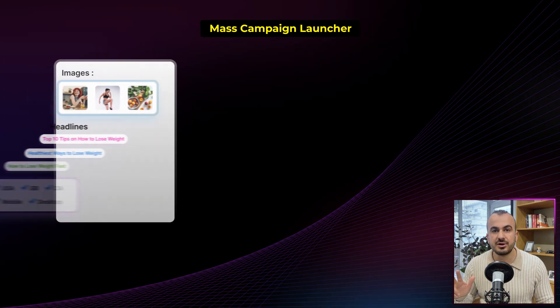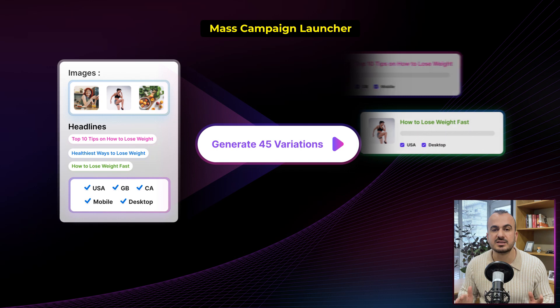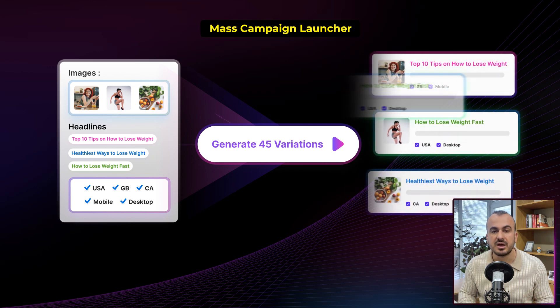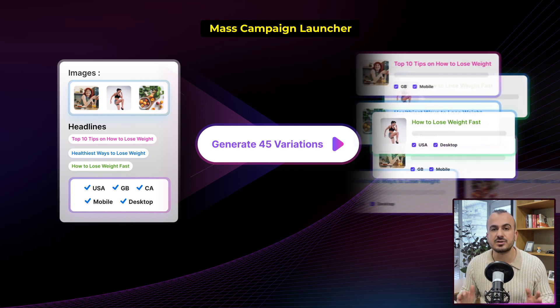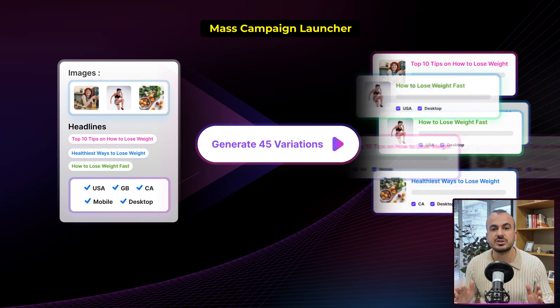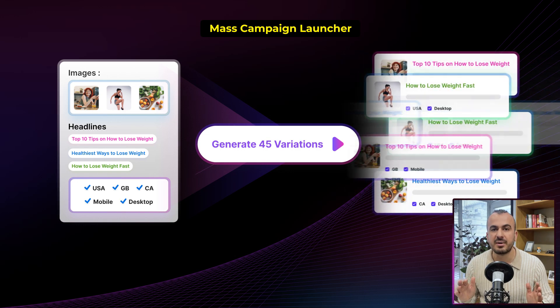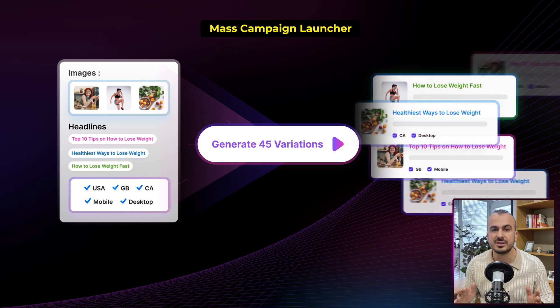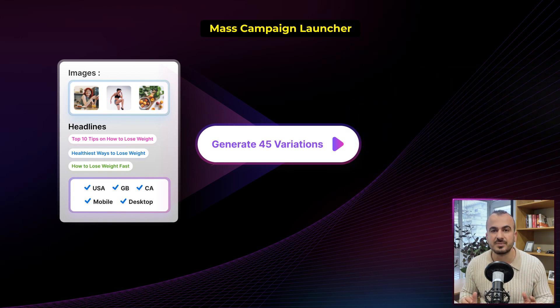And third, the optimizer has a powerful mass campaign launcher. This way you can launch hundreds of campaigns or variations in just a few clicks. You'll be saving yourself or your media buying team hundreds of hours in manual work.